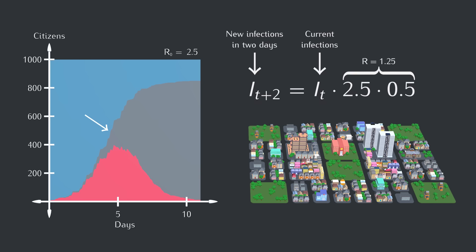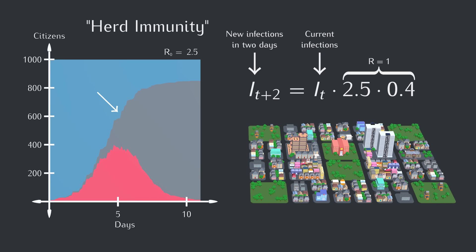When R is above 1, the epidemic is still growing. When it's equal to 1, the number of active cases stops growing. And when it's less than 1, the cases decline. When this fraction of susceptibles is small enough for R to go to 1, it's called herd immunity. But one thing we should note: herd immunity means the number of cases will start dropping, but it's not an absolute cap. The total number of cases can go much higher if a lot of cases are happening at the same time. At the peak of active cases, 41% were infectious at the same time, and when all was said and done, 85% were infected at one point or another.